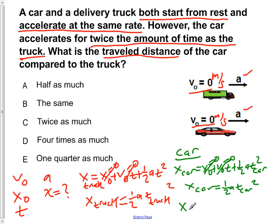But we know that the time that the car is traveling for is twice that of the truck. So two times t truck squared times A divided by half.